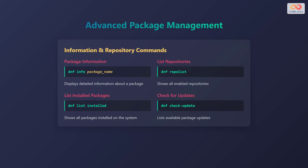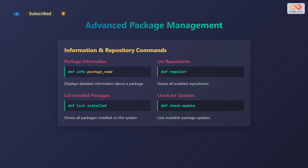Let's delve into advanced package management commands. To get detailed information about a package, use the command dnf info followed by the package name. To list all enabled repositories, use dnf repolist. To list all packages installed on the system, use dnf list installed. To check for available package updates, use dnf check-update.